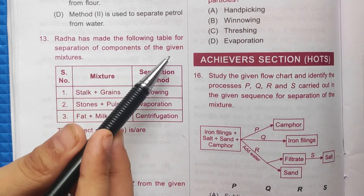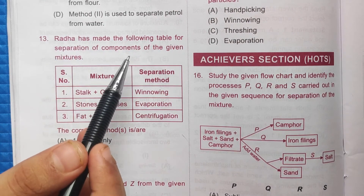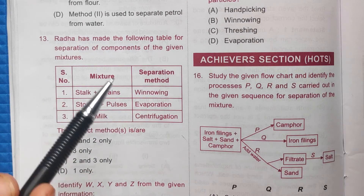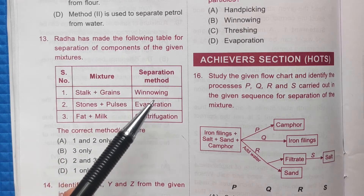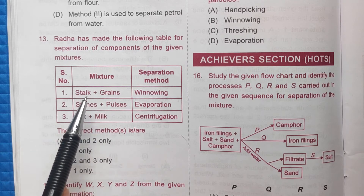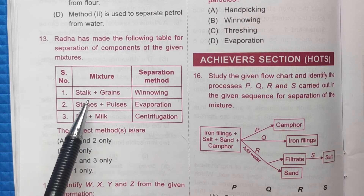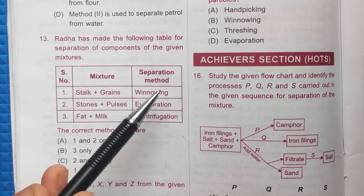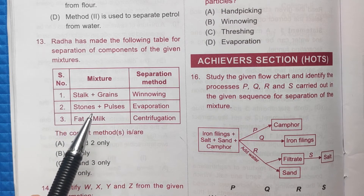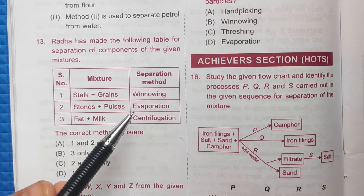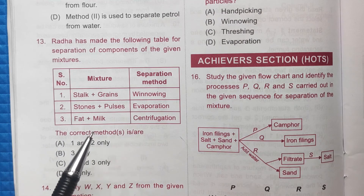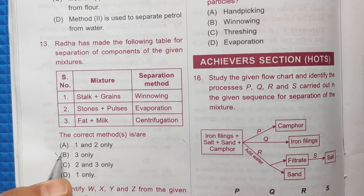Question 13: Radha made a table for separation of components of mixtures. First: stalk plus grains separated by winnowing — incorrect, because to separate stalk from grains we use threshing. Second: stones plus pulses separated by evaporation — incorrect, because stones from pulses are separated by hand picking. Third: fat plus milk separated by centrifugation — this is correct. So the correct answer is option B.